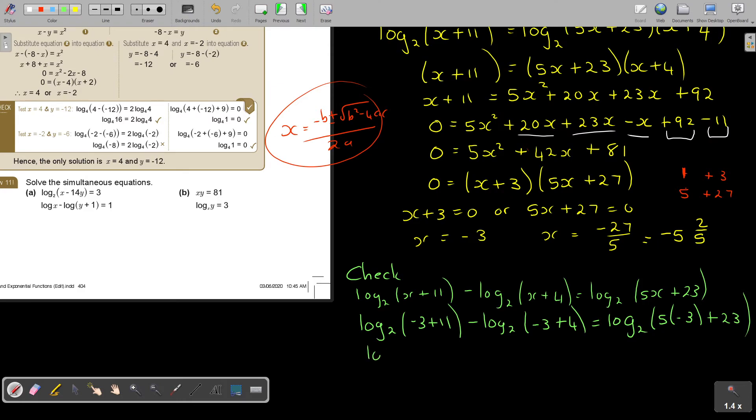So this is going to be log base 2 of (negative 3 plus 11) minus log base 2 of (negative 3 plus 4). I'm still safe. And it's going to be log base 2 of 5 times negative 3 plus 23. And if you look at this, it's going to be log base 2, and this one is just going to give you positive 8. And this one is going to give you 1, 1 is right. And this one is going to be 23 minus 15, so this is also going to be 8. So all of them, so it's a solution. This one is right.